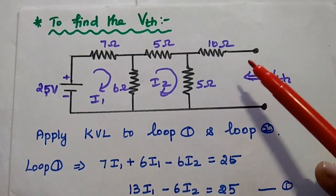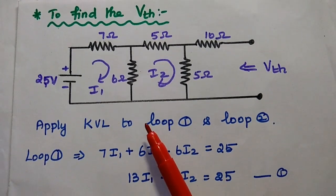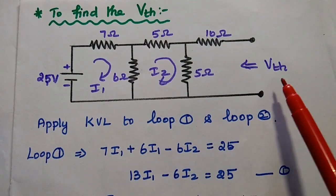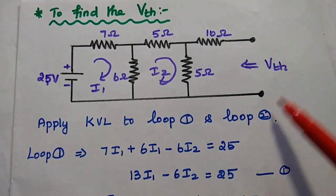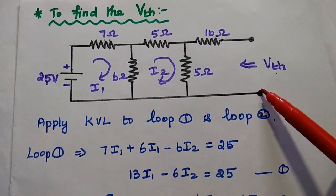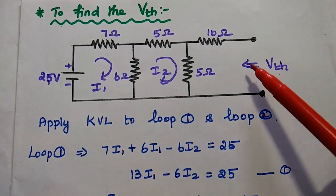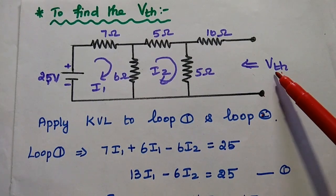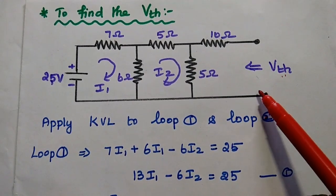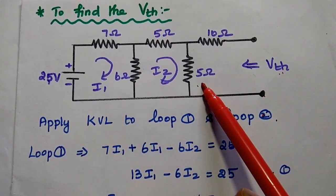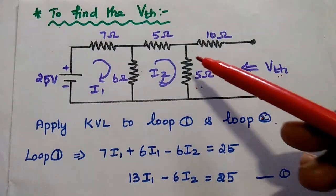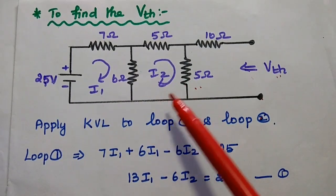Next, to find the Thevenin's voltage, we consider the given circuit as such — there is no load resistor given. We are going to find out the Thevenin's voltage across the open circuit terminals. The Thevenin's voltage is nothing but the voltage drop across this 5 ohm resistance. For that voltage drop, we need to find the current I2 flowing through this 5 ohm resistor.